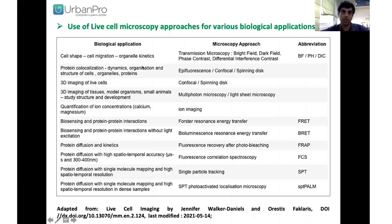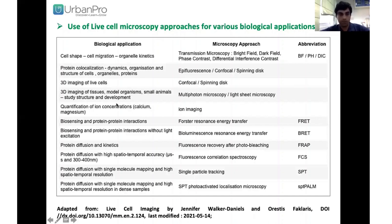For protein co-localization, you need confocal or epifluorescence microscopy. For 3D imaging, you need confocal or two-photon microscopy. For 3D imaging of tissue or model organisms, you need multiphoton microscopy. Different applications require different kinds of microscopy approaches.